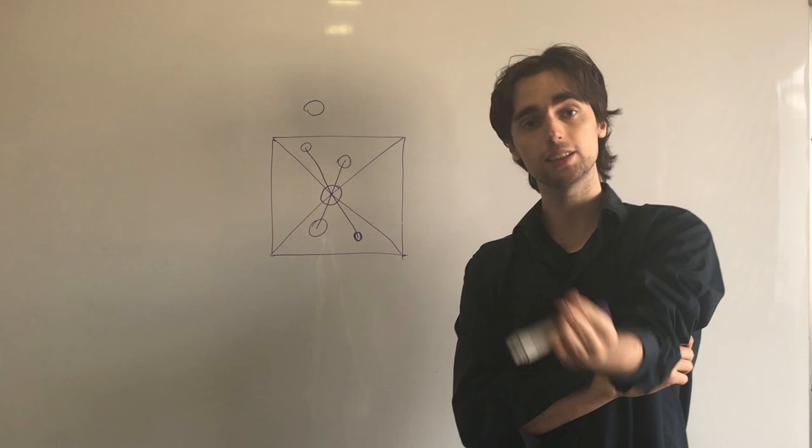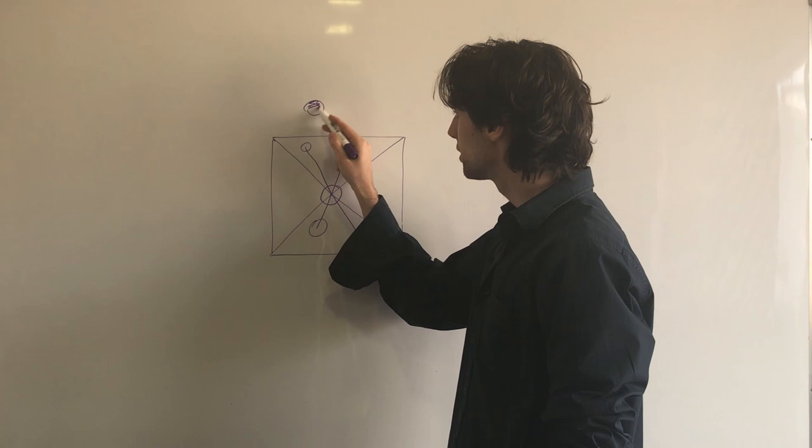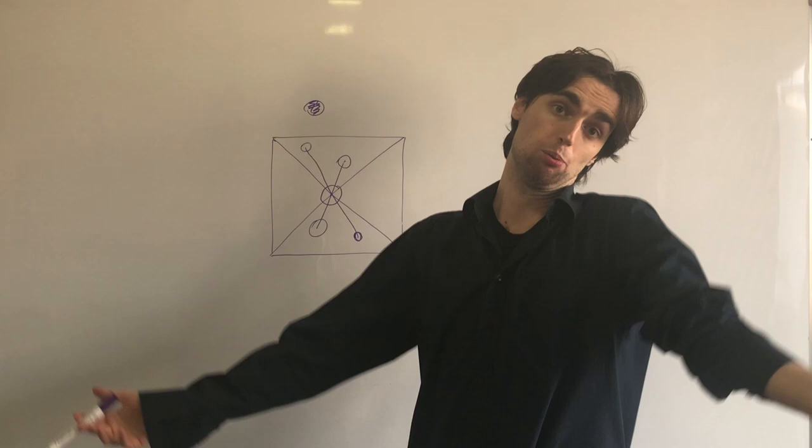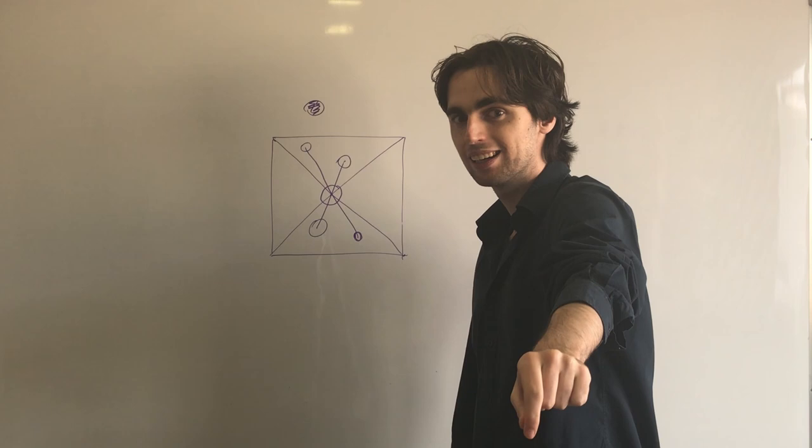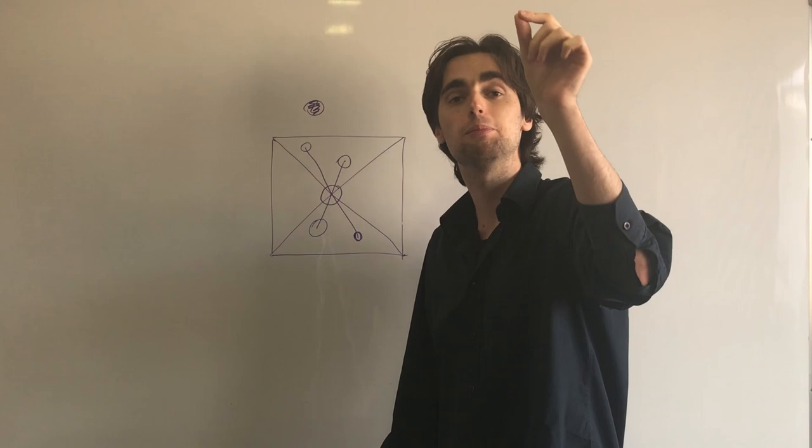But now, this means that no matter what the second player plays, you'll be able to make a move. Given that these are of some non-zero size and the table is finite, at some point we will run out of space. But the thing we know is, me as the first player, I won't run out of space. It will be the second player.